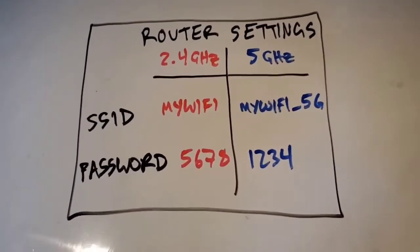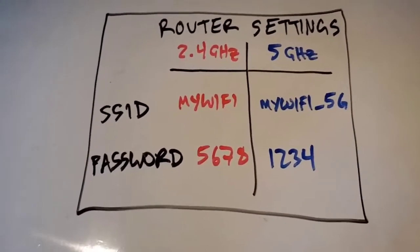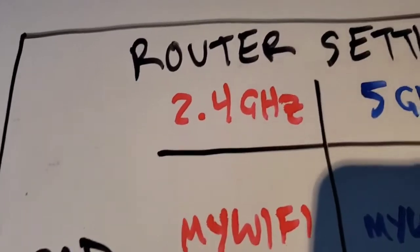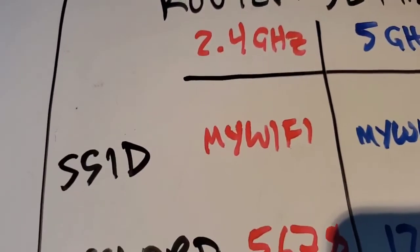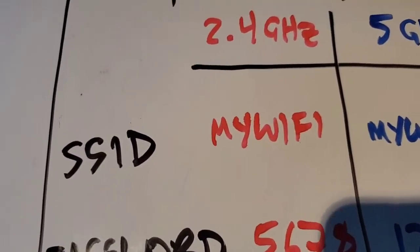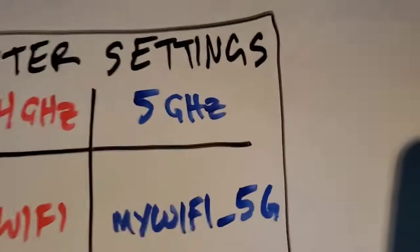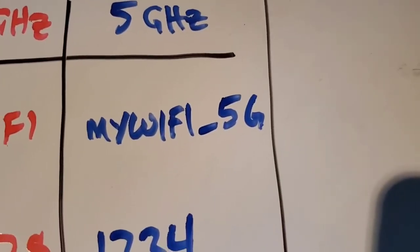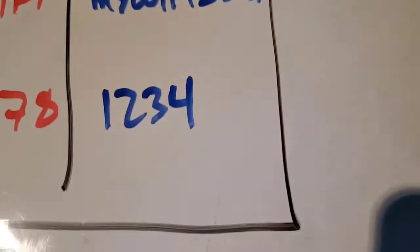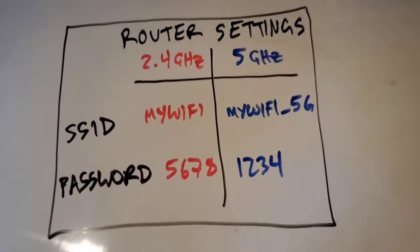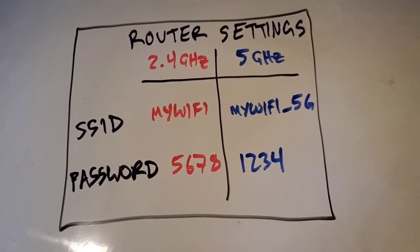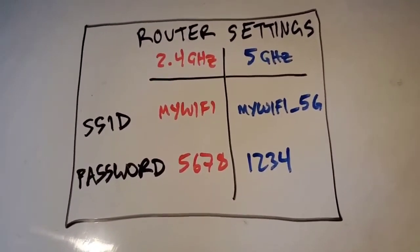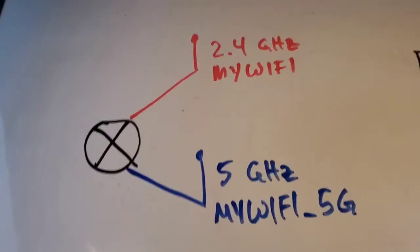When you're in your router settings, you usually have different settings for each band. The 2.4 gigahertz Wi-Fi will have its own SSID, or Wi-Fi name, and its own password. The 5 gigahertz will also have its own SSID and its own password, and these two Wi-Fi networks will simultaneously exist on your one dual-band router.